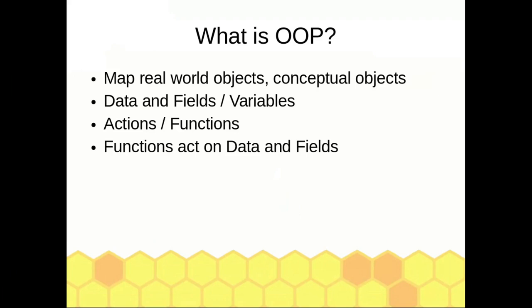Let's go to the OOP. What is OOP? OOP maps real-world objects — for example, a Bank — as well as conceptual things — for example, a Bank Account — into objects of a computer program which contain data as fields. We call them variables, and actions — we call actions functions in Java.